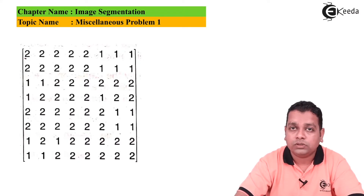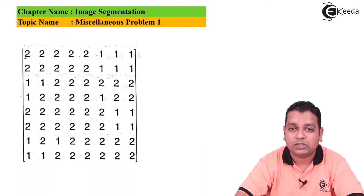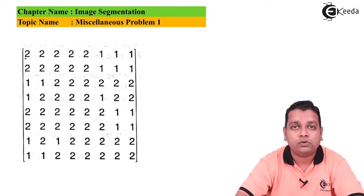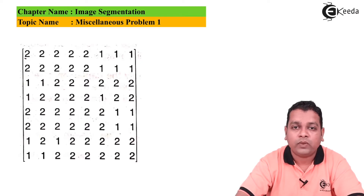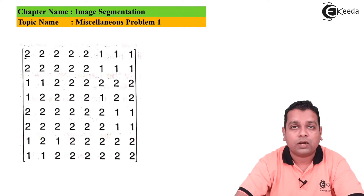In the third row, the first two elements belong to region one and the remaining six belong to region two. In the fourth row, the first element belongs to region one, then four elements belong to region two, then one element to region one, and the last two to region two. In the fifth row, the first six elements belong to region two and the last two to region one. The sixth row is similar. In the seventh row, the sequence is 1, 2, 1, 2, 2, 2, 2. In the eighth row, the sequence is 1, 1, 2, 2, 2, 2, 2. This is the resultant segmented image after applying the threshold derived from the histogram.